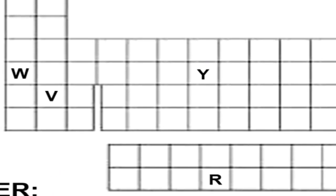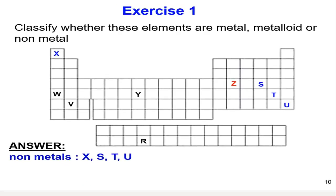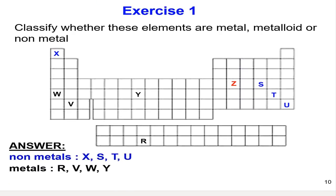While W, V, Y, and R are located in the left side and in the middle of the periodic table, so they are metals. Z is located in the dividing line that's separating the metals from the nonmetal elements. Hence, Z is metalloid.